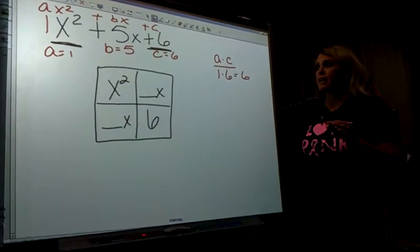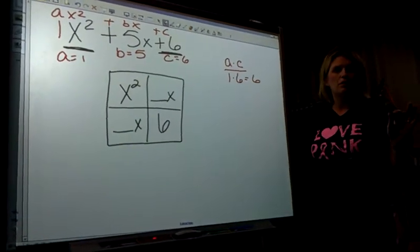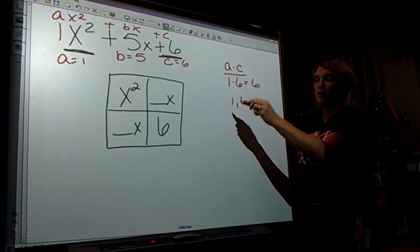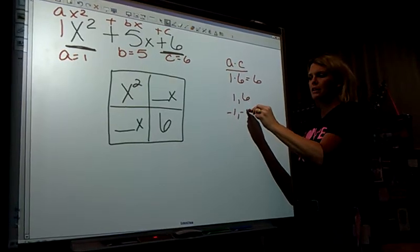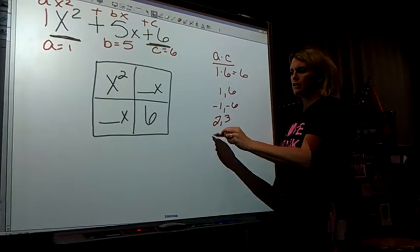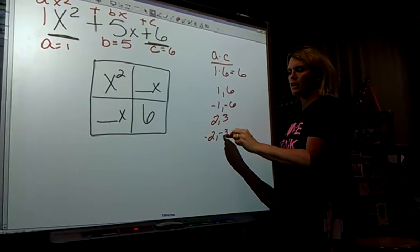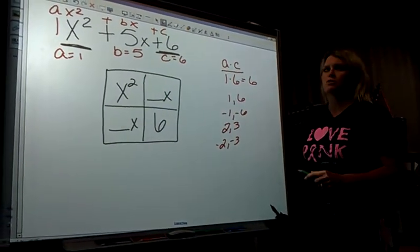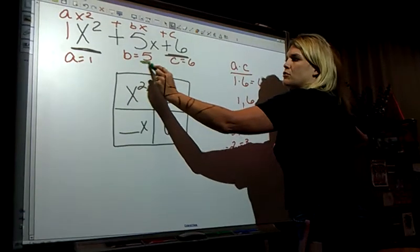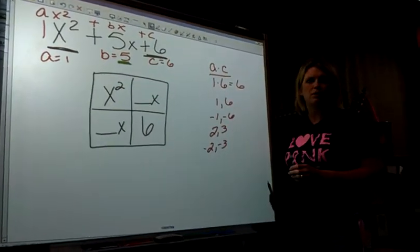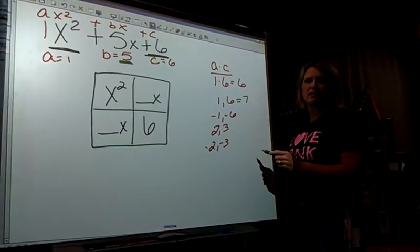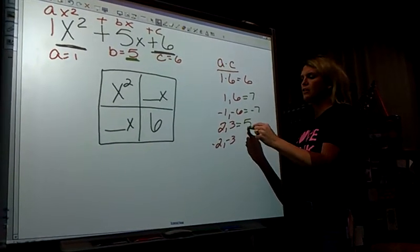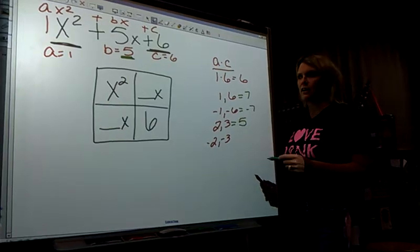Now I need the factors of 6. What numbers multiply together to give me 6? 1 and 6, negative 1 and negative 6, 2 and 3, negative 2 and negative 3. You don't always have to do all the factors if you can find the ones you need. You need the factors that add up together to give you the middle term. So this one is 7, that's not it. Negative 7. 2 and 3.